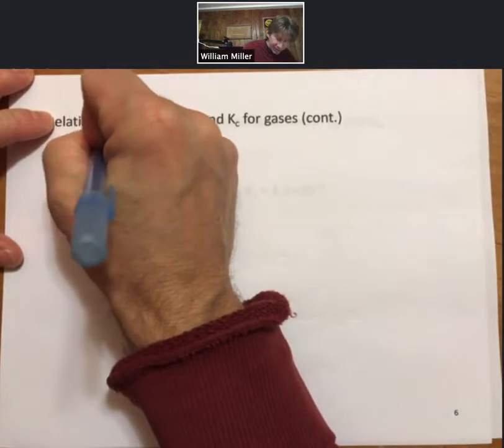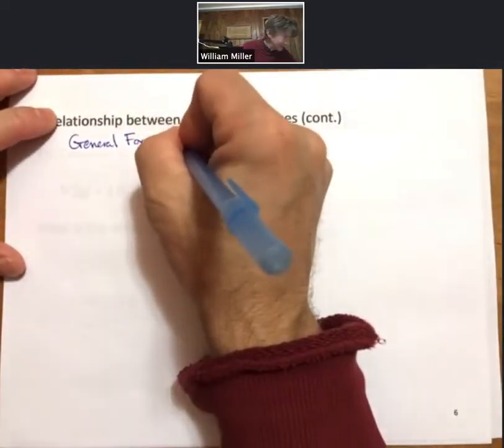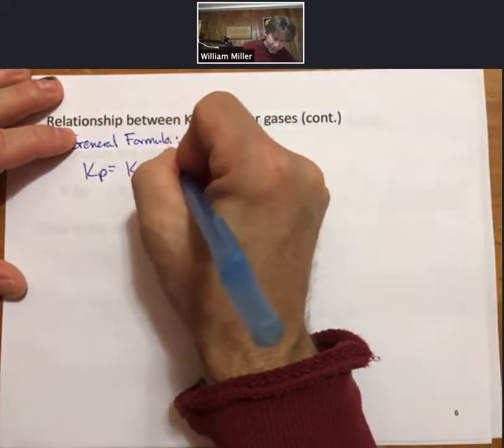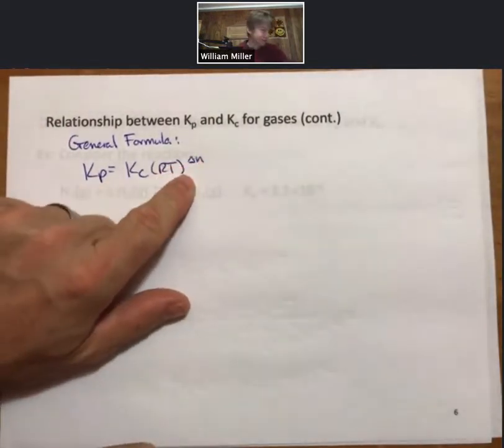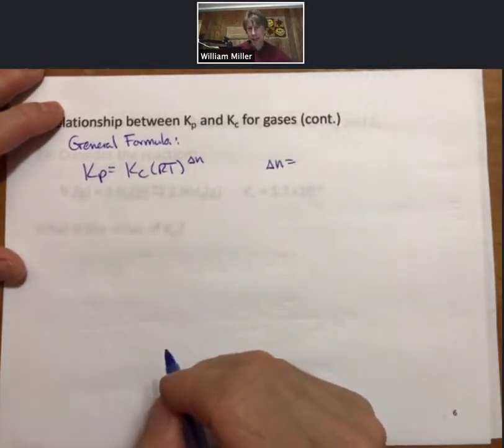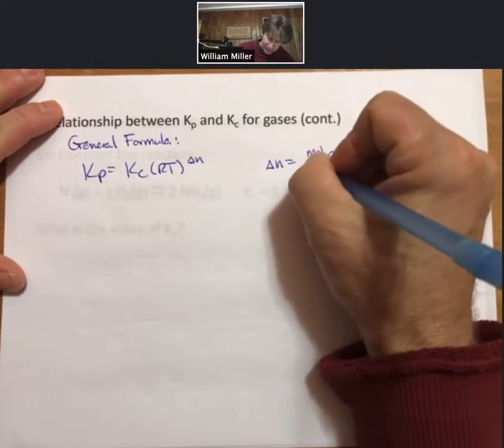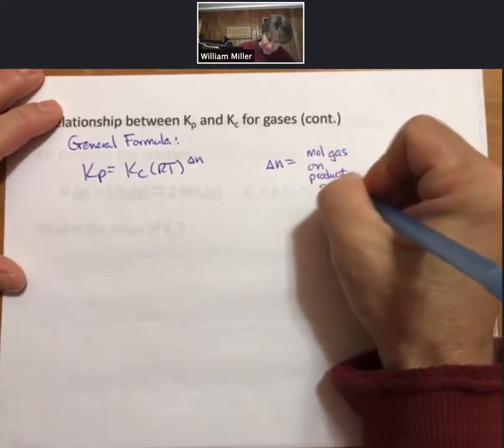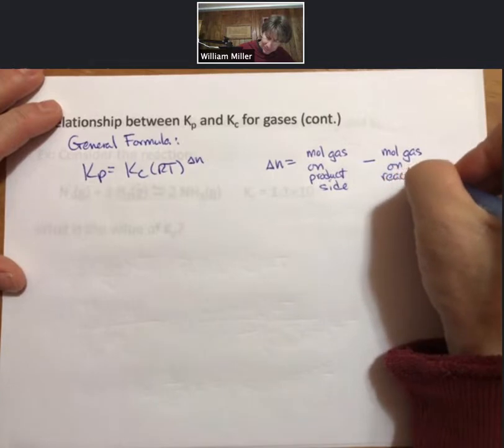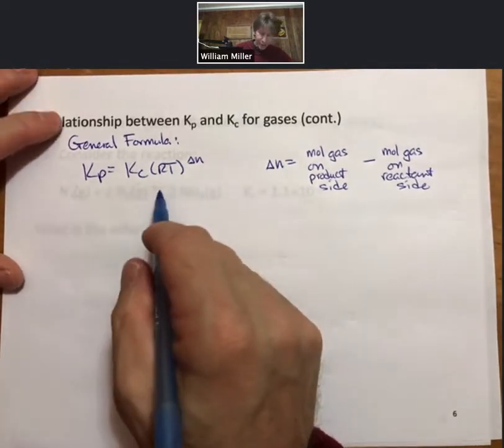So that's the relationship and our derivation of the relationship for this specific reaction. We can more generally say that there's a general formula, and the general formula says that KP equals KC times RT raised to the power of delta N, where delta N equals moles of gas on the product side minus moles of gas on the reactant side. And so this is a general formula for the above reaction.